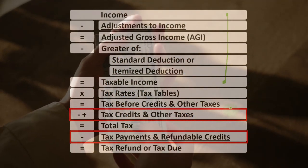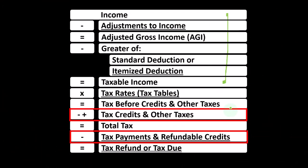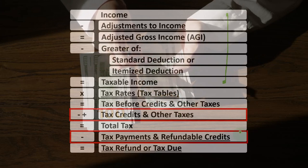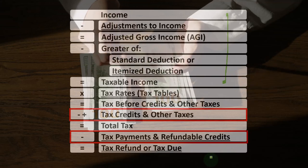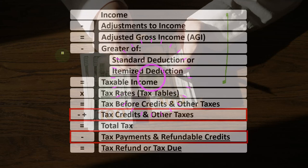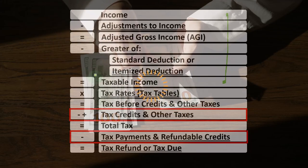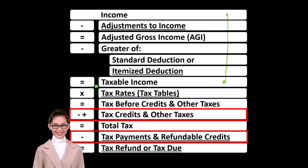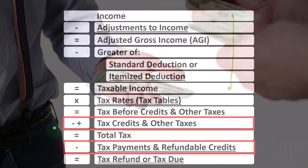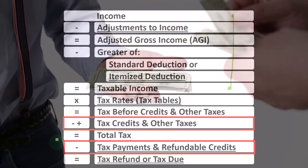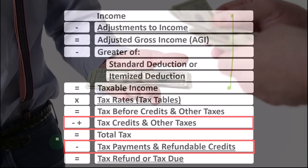Then we get to the credit area as well as other taxes, which could include self-employment tax. Then we deal with payments — withholdings or estimated tax payments — to arrive at the bottom line: tax refund or tax due. Remember, credits are like deductions in that we like them both, but if we can get a dollar credit versus a dollar deduction, we'd usually rather have the dollar credit because we get the full dollar benefit, whereas a deduction simply reduces taxable income by a dollar, with the benefit dependent on our tax rate. Also, credits are broken out into non-refundable and refundable credits. Non-refundable credits do not take tax liability below zero, while refundable credits do, making the tax code more like a welfare or benefit program once you go past that point.